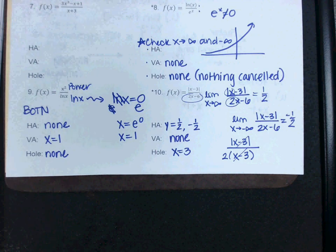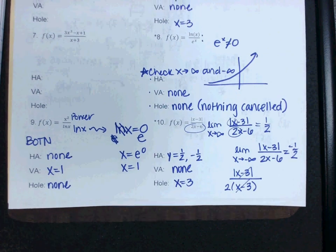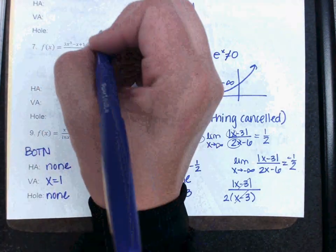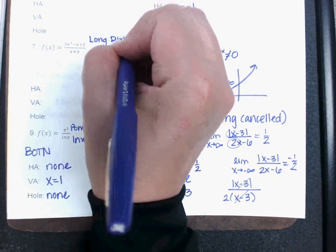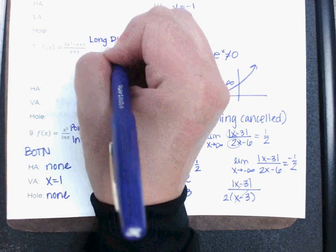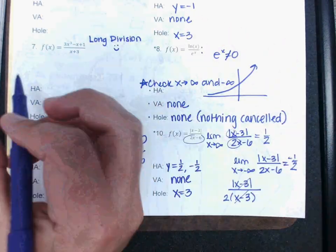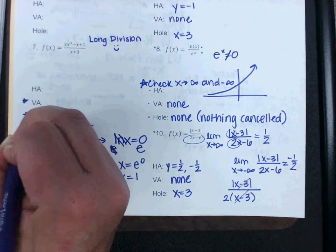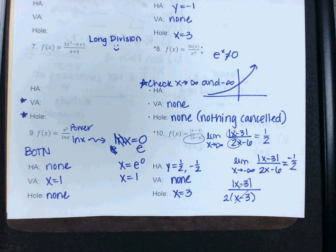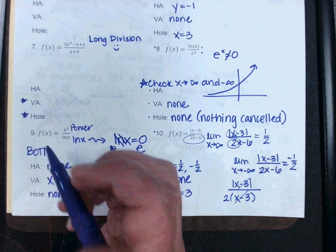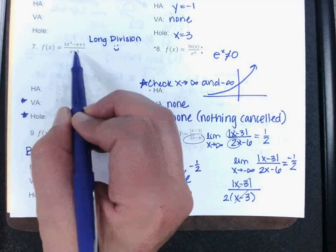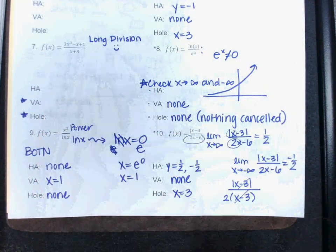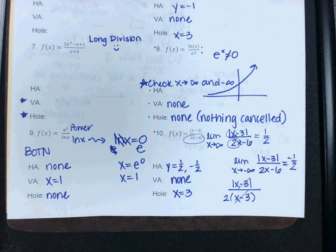The last one I'm going to just give you a hint on is number 7. You cannot factor that. You're going to have to do long division. And you only need to do long division to determine whether or not these factors cancel or not. So the horizontal asymptotes will be easy. You'll use your rules as usual. But then when you're trying to see if x plus 3 is a factor, you'll have to divide it to know if it can cross out.